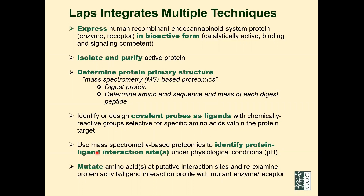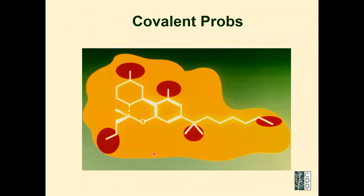We developed two approaches: one using mutations of different amino acids to find which one, when mutated, does not form a covalent bond; and another using mass spectrometry. We develop ligands that can be a hundred times more potent than THC, they form a covalent bond, we isolate the ligand-receptor complex, and by mass spectrometry we can find out exactly where the ligand is. For example, we put an azido group on the molecule — when light is shone on it, nitrogen is expelled, leaving a reactive nitrogen that forms a covalent bond with whatever is closest in the active site.